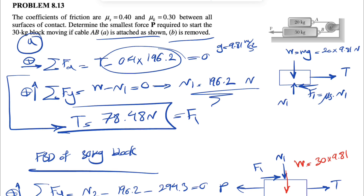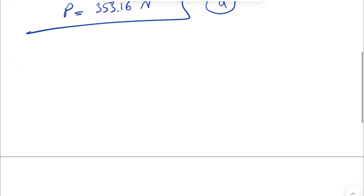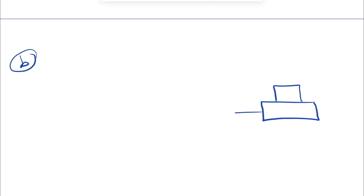For Part B, we remove the cable. Without the cable, we have a single free body diagram for both blocks together — two boxes stacked on each other. Force P is applied, and the combined weight is (20 + 30) × g = 50 × 9.81.